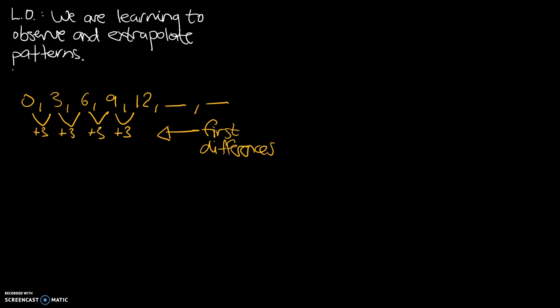That allows us to figure out that every single time we're going to add 3. So to find our next number, we go plus 3, and that gets us to 15. And to find the number after that, we add another 3, and that gets us 18. So we've explored the first difference to find out that we're consistently adding 3.